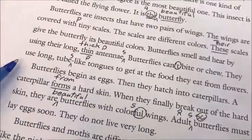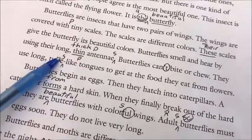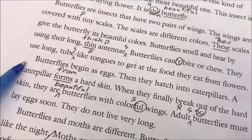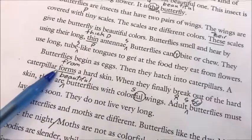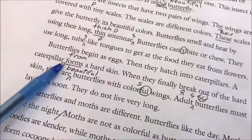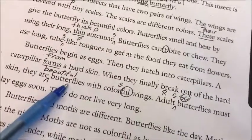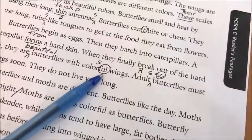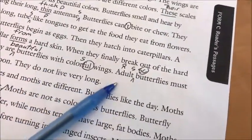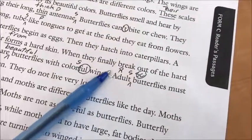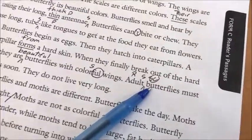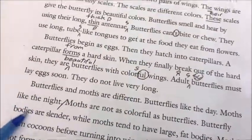Going further, he inserted an S — 'tubes' — which doesn't change the meaning. In the next paragraph, he said 'from a hard skin' instead of 'forms a hard skin,' which doesn't really change the meaning either. Then he inserted 'beautiful butterflies' and said 'colors wings,' omitting 'full' — so 'colorful.' Then for 'adult,' he repeated it, added an S to make 'adults,' then self-corrected back to 'adult.' And that's pretty well it for the hundred words.